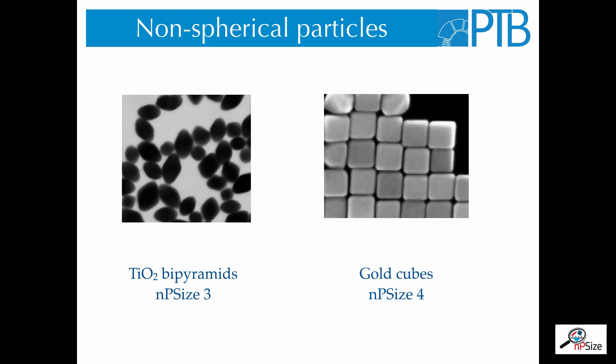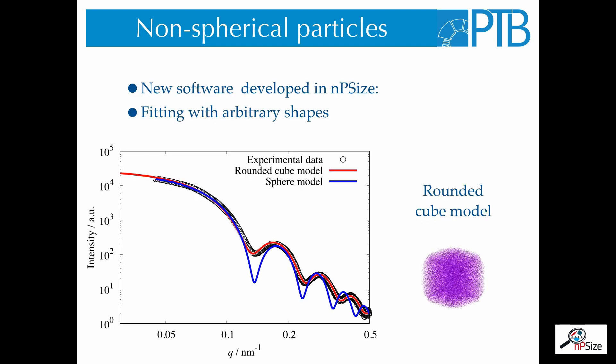In NP-size, we have not only spherical particles, but also nanoparticles with different forms. For example, the NP-size 3 material is a dispersion of small bipyramids made of titania in water. And the NP-size 4 material is a dispersion of nanometric gold cubes. It is obvious that for these particles, we cannot model them as spheres. Here you see the experimental data, the scattering curve from the gold cubes.